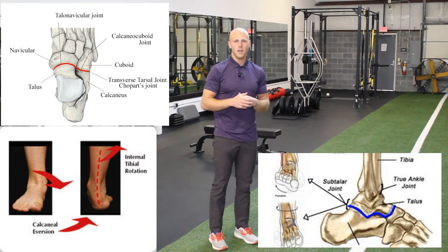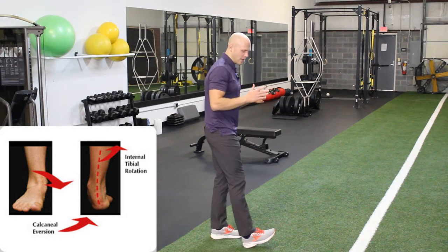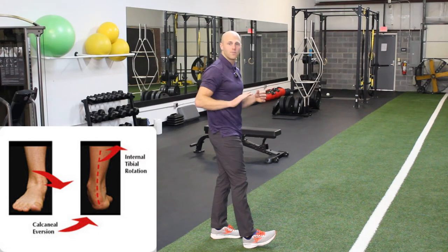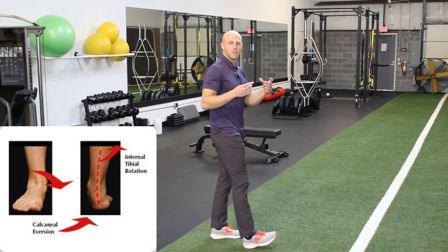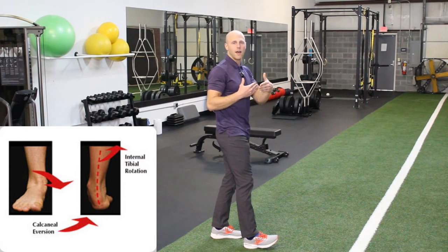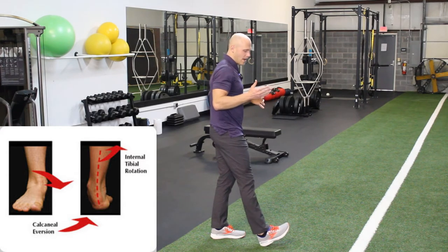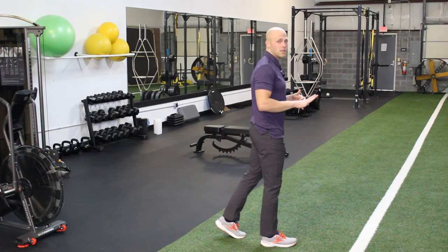The transverse tarsal joint is made up of your talonavicular joint and your calcaneal cuboid joint. The names of those joints don't matter too much. Just understand that as your calcaneus everts, the subtalar joint axis of motion becomes parallel to the transverse tarsal joint axis of motion, and that allows increased motion — meaning it unlocks the foot — because these axes are now parallel to each other. So the foot is unlocked and can start to pronate as we move into mid stance.